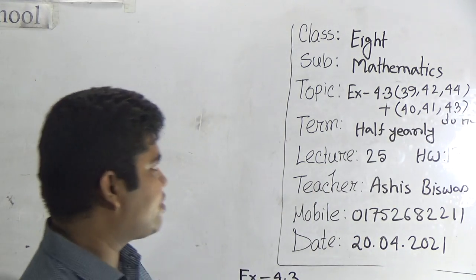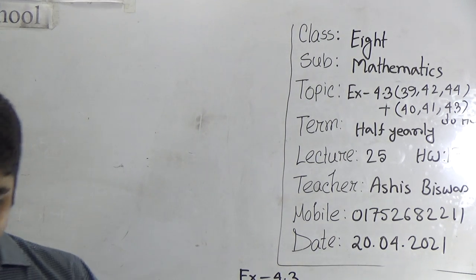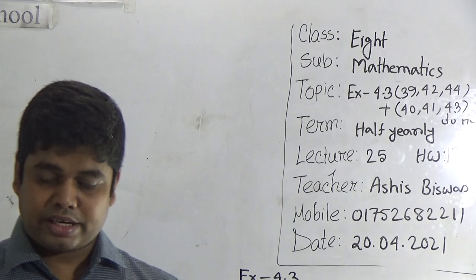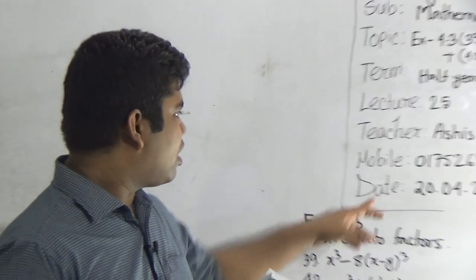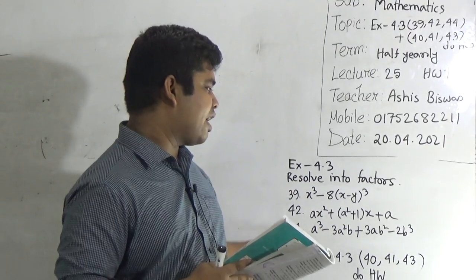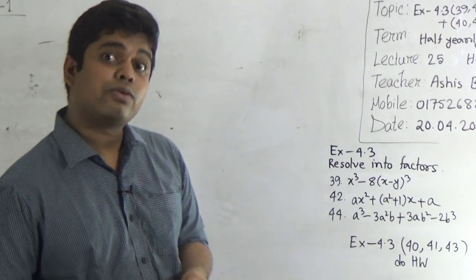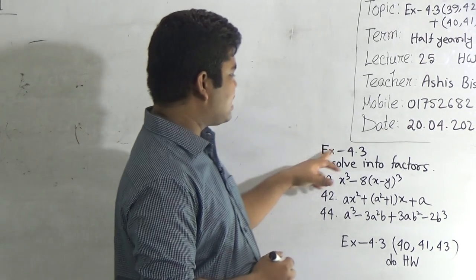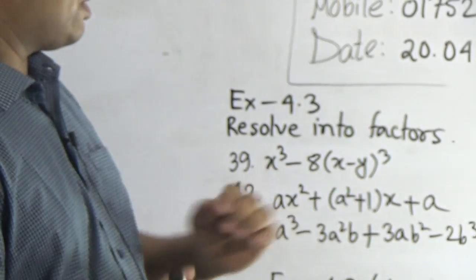So my dear student, let us start the class. Please open your math book, page number 69. From that chapter, we shall solve 39, 42 and 44. I have already written these questions on the board, so follow the board please. Here, you know this exercise 4.3 is about resolving into factors.